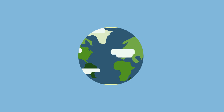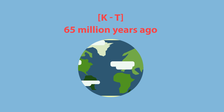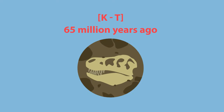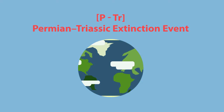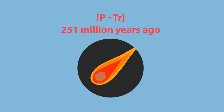The most famous mass extinction, called the KT extinction event, occurred about 65 million years ago and involved the extinction of the dinosaurs. The most devastating extinction event happened 251 million years ago and completely eradicated 96% of all known species. This was probably due to a comet or asteroid impact.